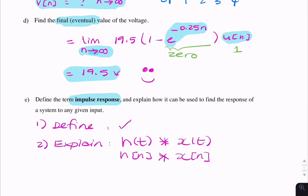For the second part, you would say we can find the output of a system to any input by carrying out a convolution between the impulse response and the input signal. That's what you need for the five marks for part E. And that's the end of this.